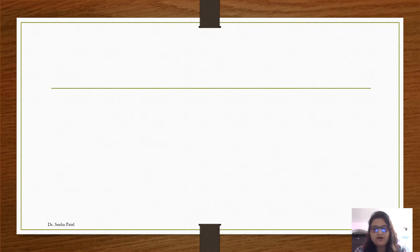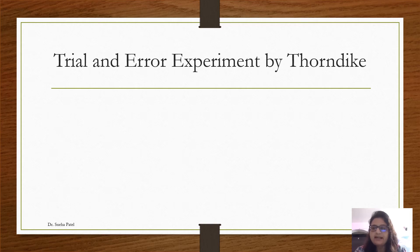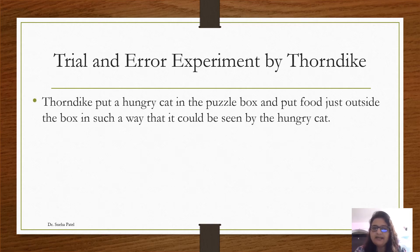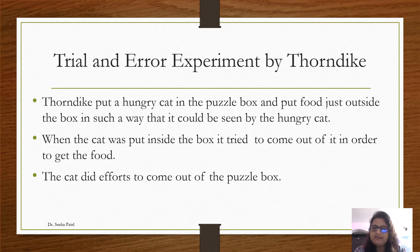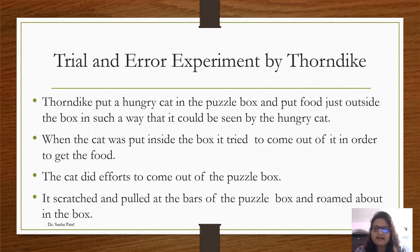The experiment of trial and error was conducted on a cat. Thorndike put a hungry cat in the puzzle box and put food just outside the box in such a way that it could be seen by the hungry cat. When the cat was put inside the box, it tried to come out in order to get the food. The cat repeated many attempts to get out — it scratched, pulled at the bars of the puzzle box, and roamed about in the box so that it could come out and eat the food.